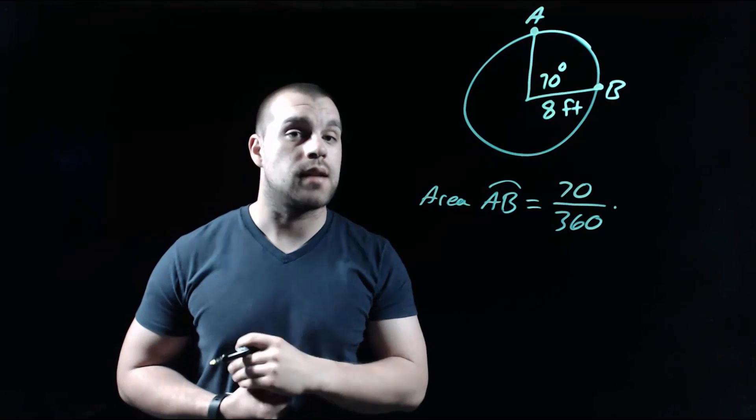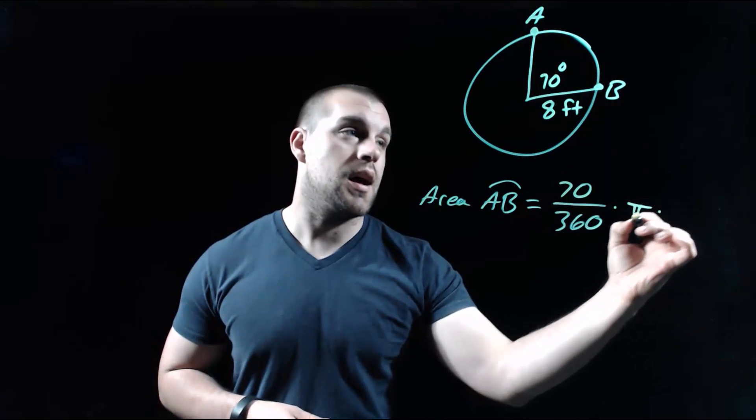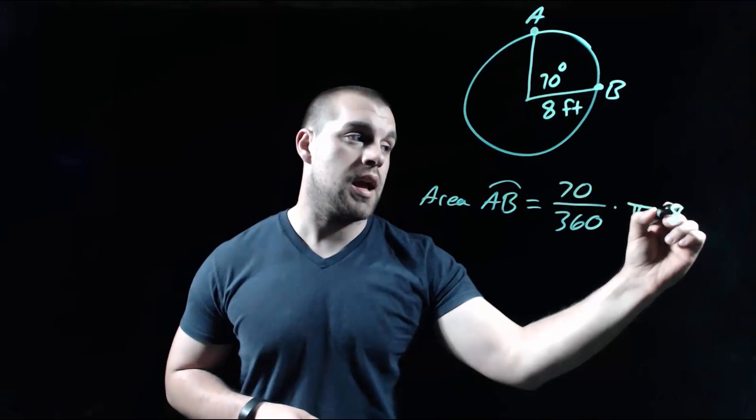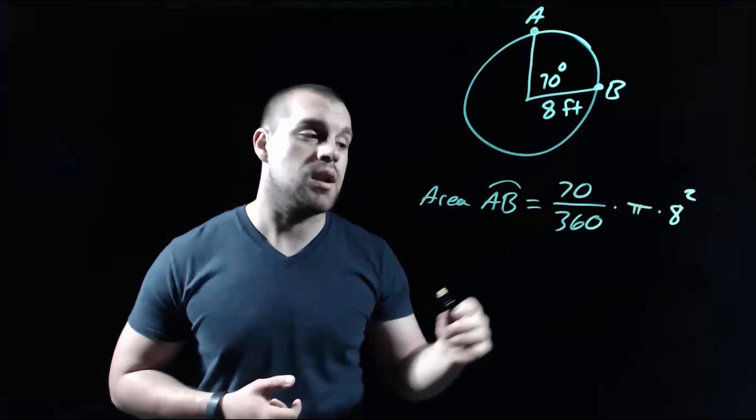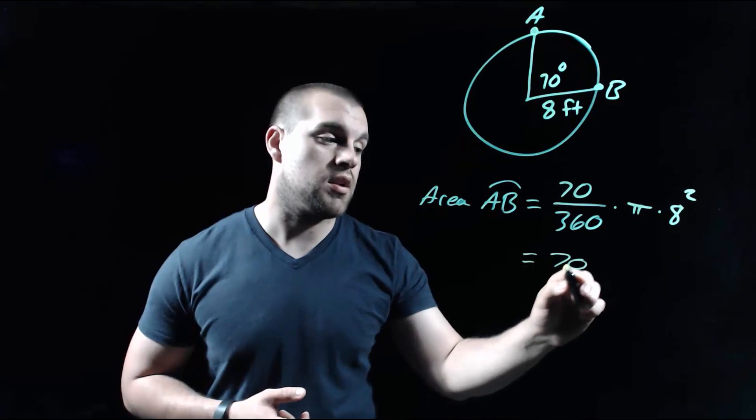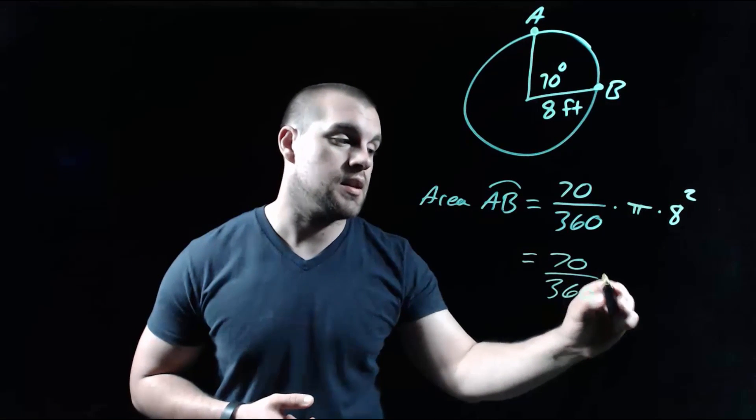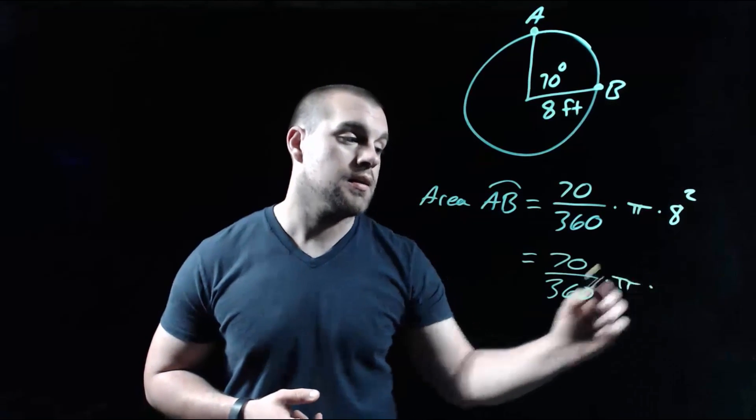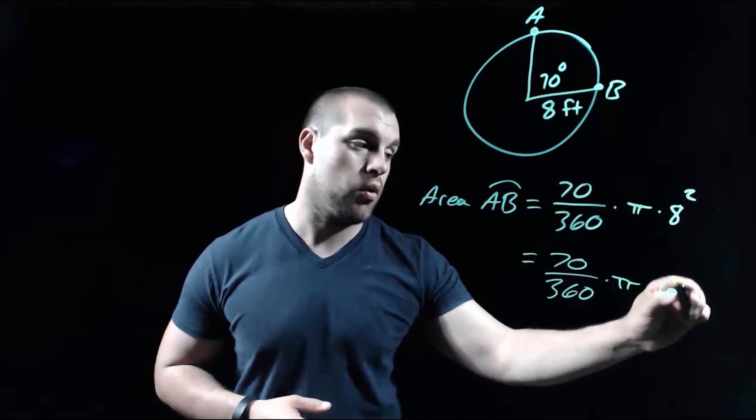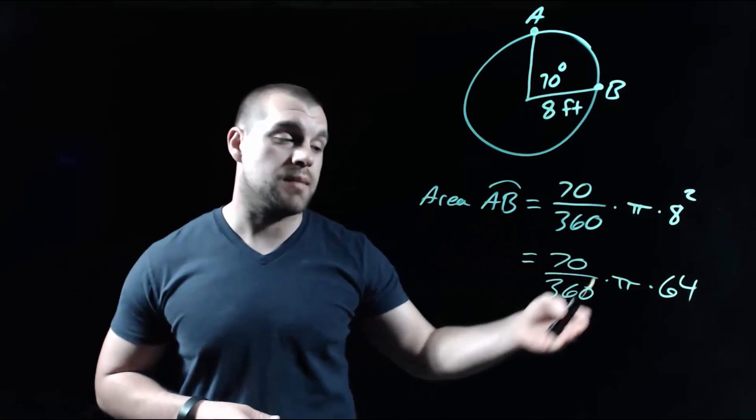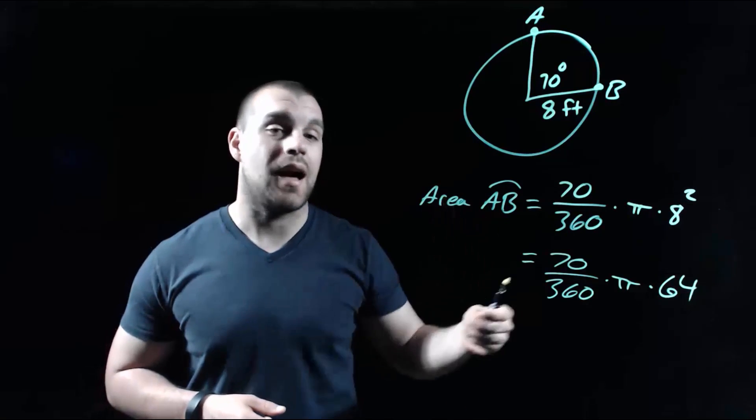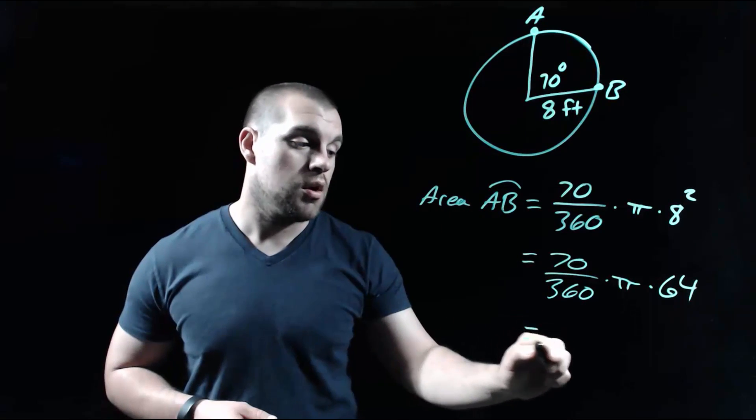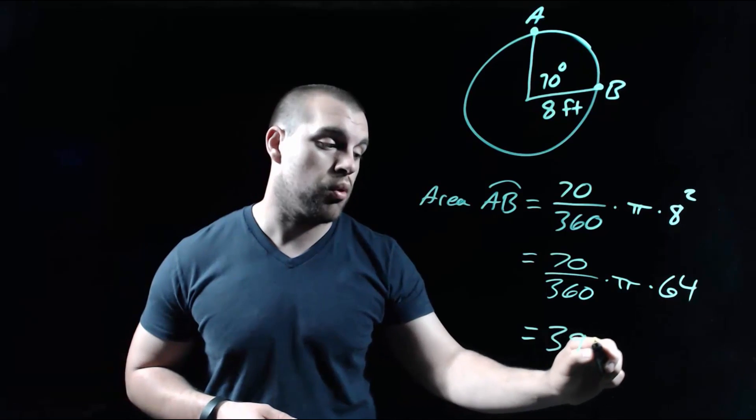So remember, area is pi times the radius squared. So we've got pi times our radius is 8 squared. Now I'm going to simplify this down a little bit before I type it into my calculator. So we've got 70 over 360 times pi times 8 squared is the same as 64. So now we should be able to just type all of this into our calculator. 70 divided by 360 times pi times 64. When we do that, we should get about 39.10.